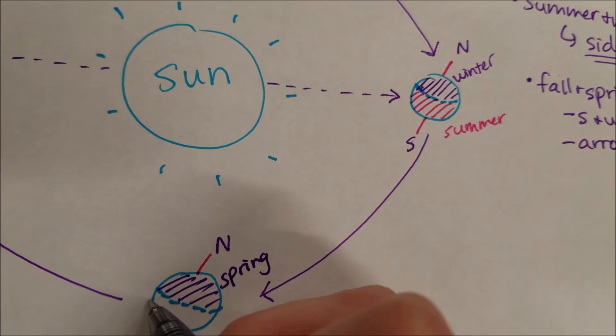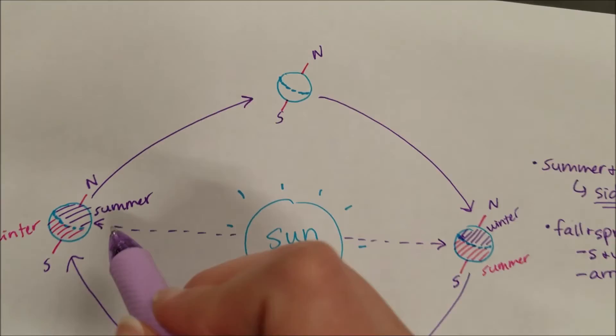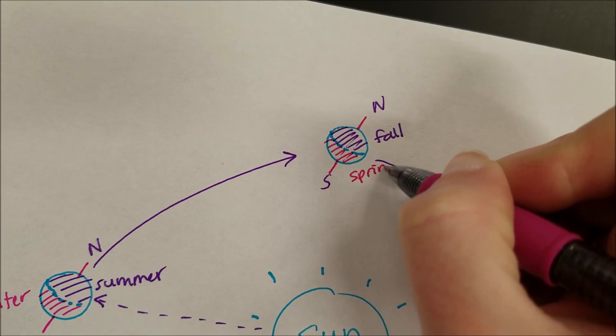The southern hemisphere is exactly opposite, so this location would be experiencing fall. As we go around, in the northern hemisphere after spring we experience summer. After summer, things start to cool down. Following the arrows, we would be in fall in the northern hemisphere, and in the southern hemisphere they would be experiencing spring.